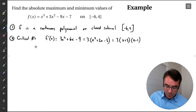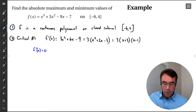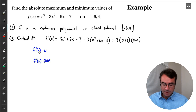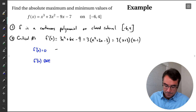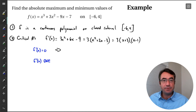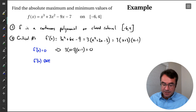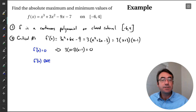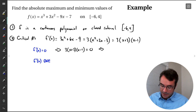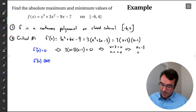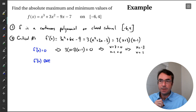To find the critical numbers, we look for where the derivative is 0 or where it does not exist. Setting 3(x plus 3)(x minus 1) equal to 0, each variable factor gives us a solution. Setting x plus 3 equal to 0 gives x equals negative 3, and setting x minus 1 equal to 0 gives x equals 1. Those are our critical numbers.